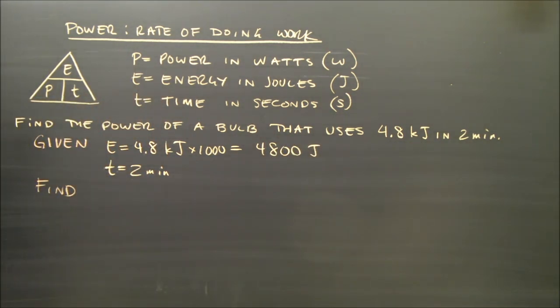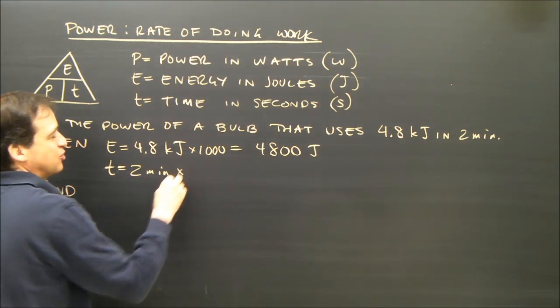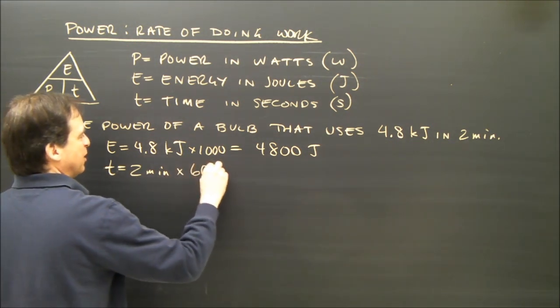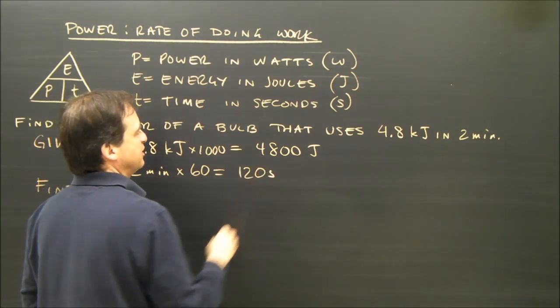What about the time? The time is supposed to be in seconds and I've got it in minutes. To turn minutes into seconds I multiply by 60. 60 times 2 is 120 seconds.